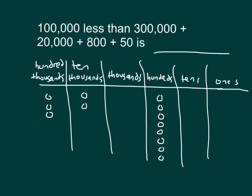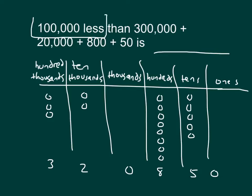We have 800, so we'll place eight disks in the 100s place. Then we place disks in the 10s place as well. So we have modeled this number — the number we just modeled is 320,850.